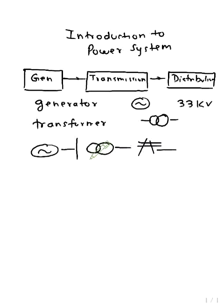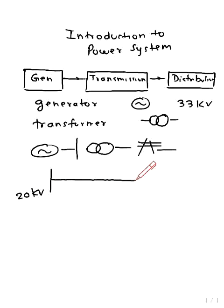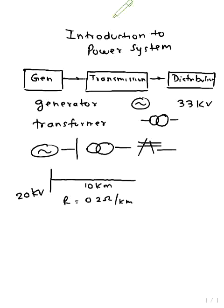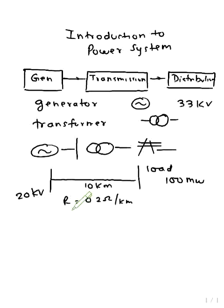Now we will see a problem: if we are not using a transformer, what will happen? Suppose the generation is 20 kV, the transmission line length is 100 kilometers, the resistance is 0.2 ohm per kilometer, the load power is 100 megawatt, and the power factor is unity (cos θ = 1).